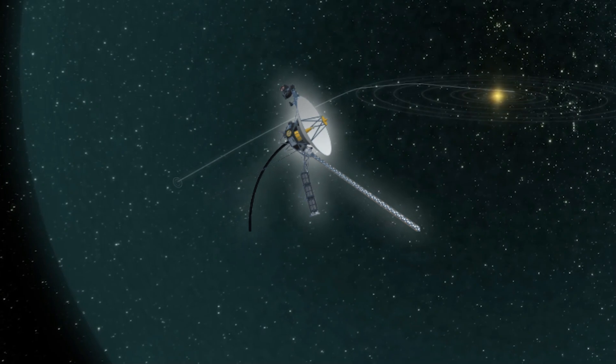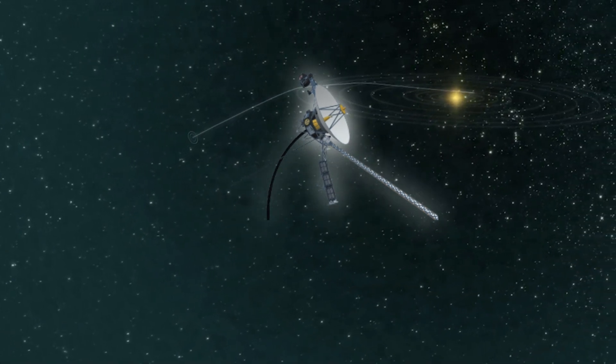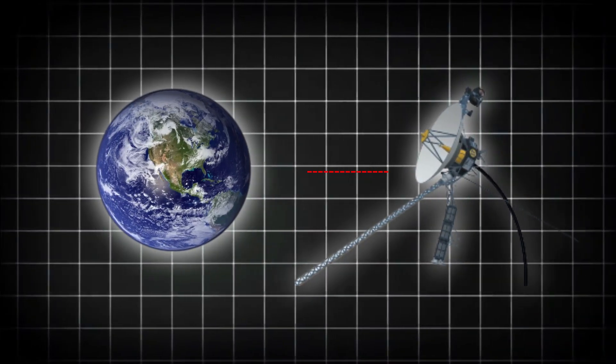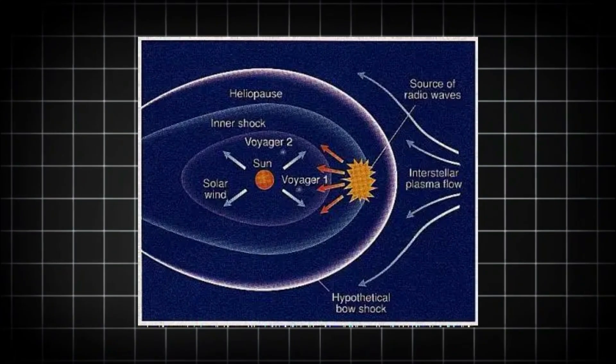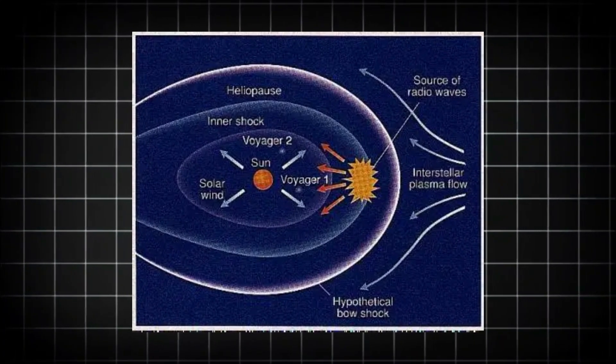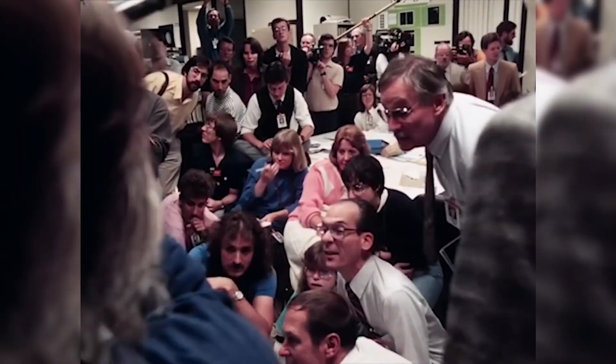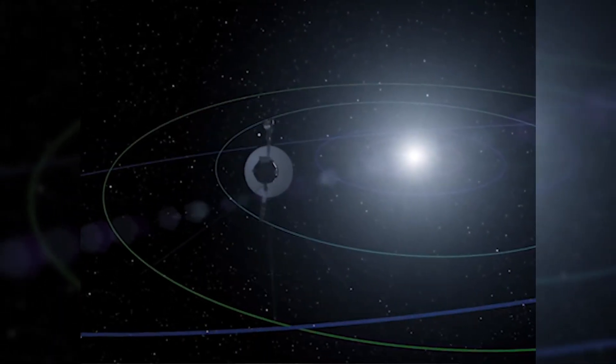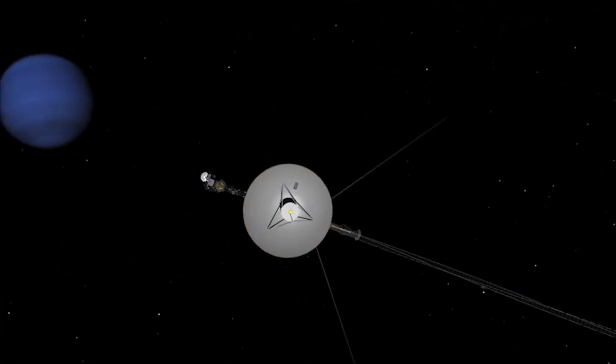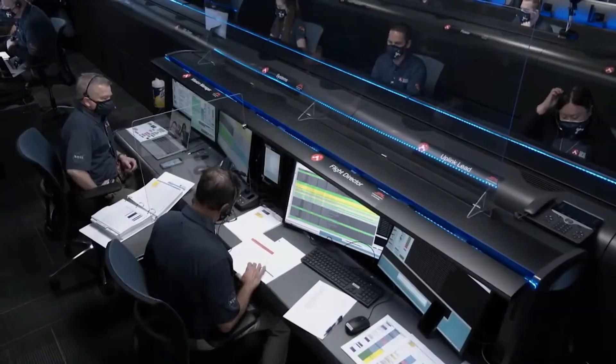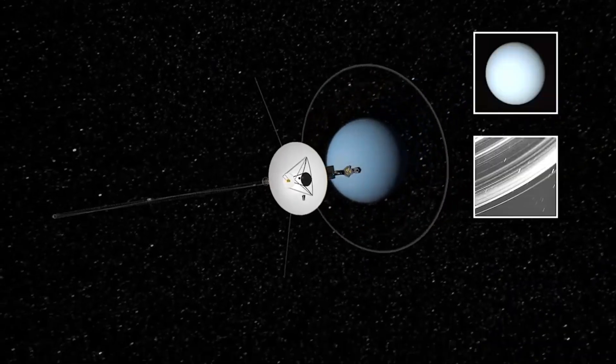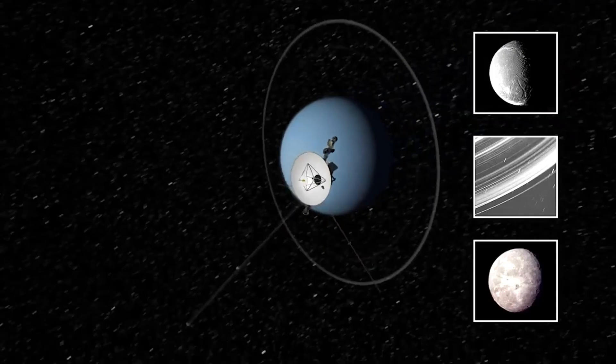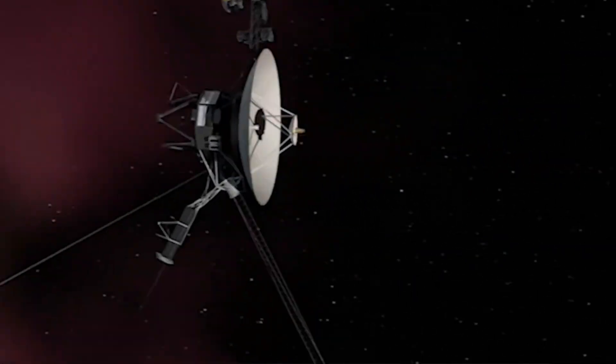The Voyager missions, long past their prime, continue to defy expectations, especially in the realm of communication. This extraordinary feat of data transmission, especially given the spacecraft's age and the challenges posed by the interstellar medium, has raised eyebrows among space experts and engineers alike. The question is, how is this even possible? And what does this unexpected performance mean for the future of space exploration?